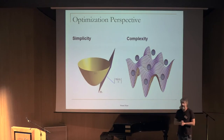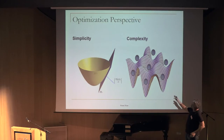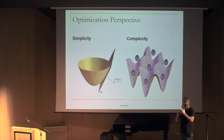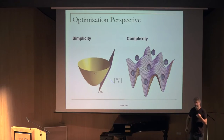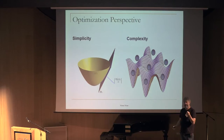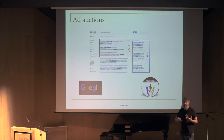One point of view I take is the optimization perspective. If you have a nice bowl with one local minimum where a ball drops to the bottom, that's simplicity — Arrow-Debreu on the left. If you have many local minima and the question is which one you choose and how they relate, that's complexity. For example, Gale-Shapley I'd put on the right.